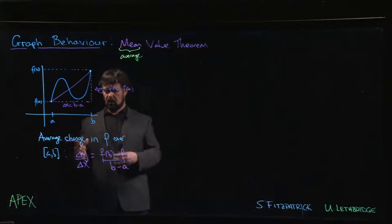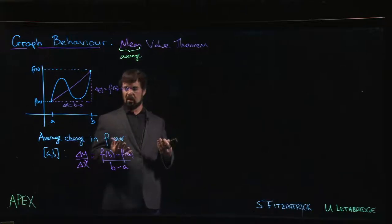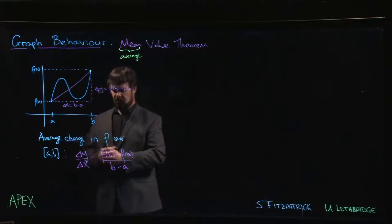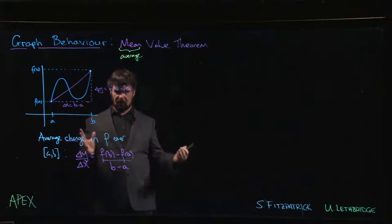So what exactly does the Mean Value Theorem say? What the Mean Value Theorem says is that under some reasonable conditions, the average change in your function is going to be equal to the instantaneous rate of change.